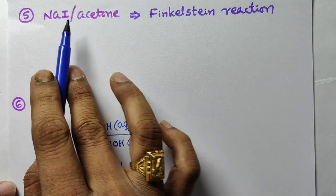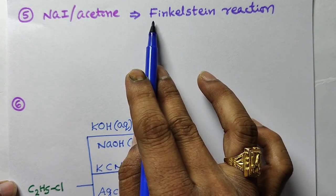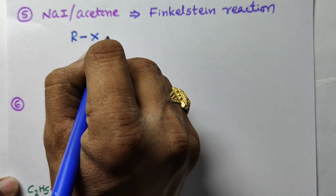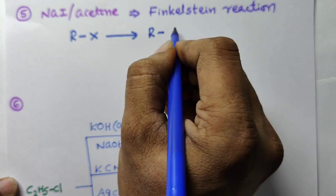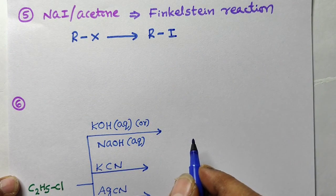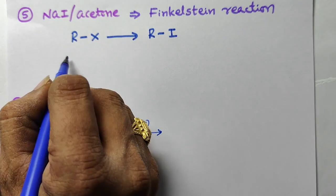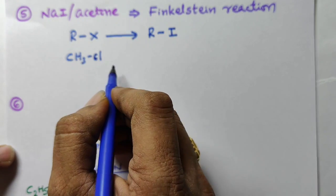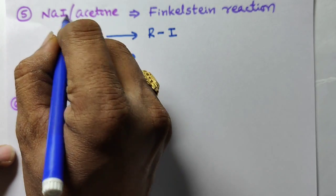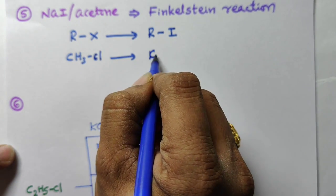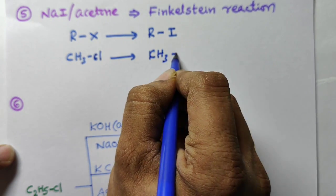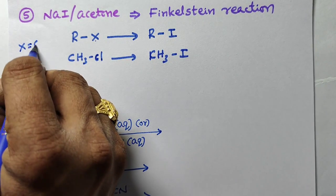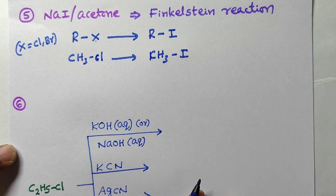Next reagent: sodium iodide in dry acetone, which is used in the Finkelstein reaction. In this reaction, alkyl halide is converted into alkyl iodide. For example, CH3Br or CH3Cl — the chlorine or bromine is replaced by iodine to give CH3I. X can be either chlorine or bromine.